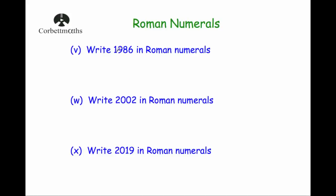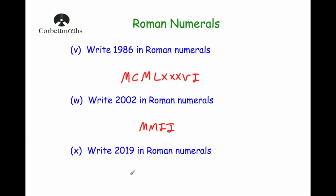Now our last few examples — write nineteen eighty-six, perhaps from a TV program, in Roman numerals. One thousand is M, nine hundred is CM — a hundred before a thousand. Eighty is LXXX — fifty, ten, ten and ten. And six is VI. So nineteen eighty-six is MCMLXXXVI. Write two thousand and two — MM for two thousand and II for two, so MMII. Write two thousand and nineteen — MM for two thousand, and nineteen is XIX — ten and then IX for nine. So MMXIX.